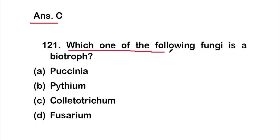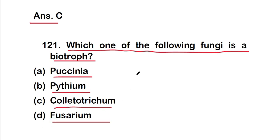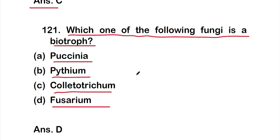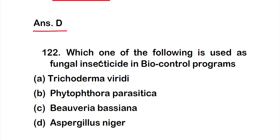Question 121: Which one of the following fungi is a biotroph? The options are: option A - Puccinia, option B - Pythium, option C - Colletotrichum, or option D - Fusarium. The right answer is option D, that is Fusarium.